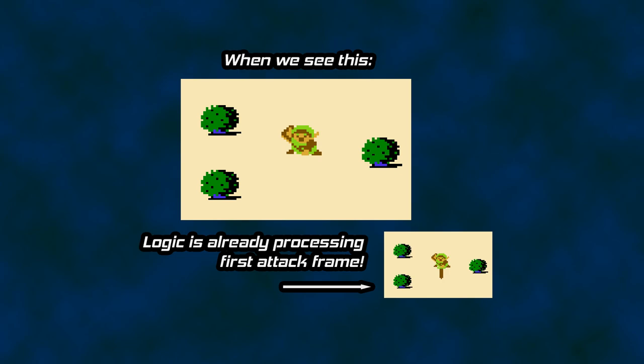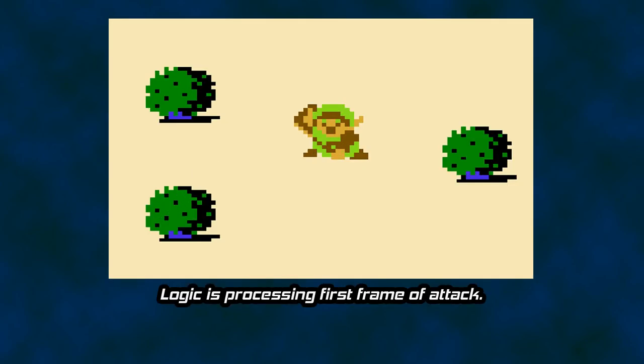Also note that the graphics we see on screen at any moment in time are one frame behind the logic we are currently processing. This is by design — the graphics you see on screen are always the result of the logic performed during the last frame. For example, Link pulls his shield to the side and puts his hand out in front of him before the sword appears. Our logic has to set up what will be drawn the next frame. I will put a few of the result graphics that would appear in the next frame as it is easier to talk about collision detection if you actually see the sword.